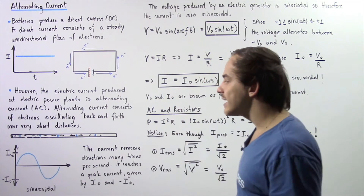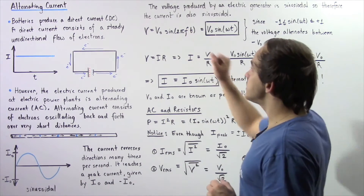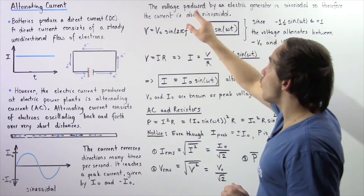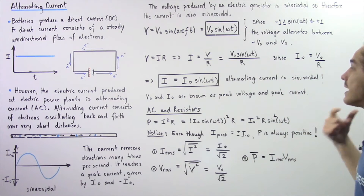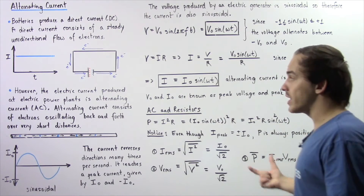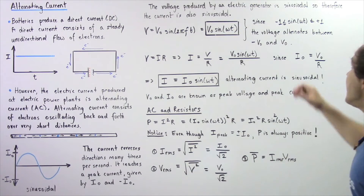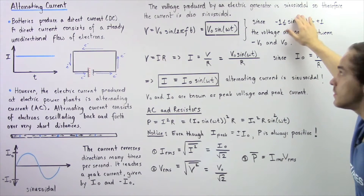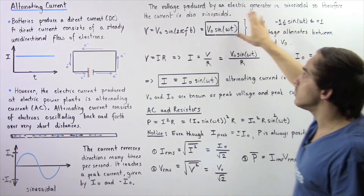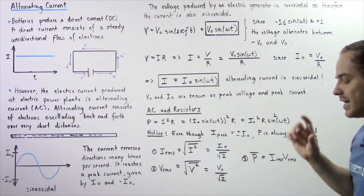Why exactly is it sinusoidal? It turns out that the voltage produced by an electric generator inside an electric power plant is sinusoidal. And as a result of that, the electric current is also sinusoidal.